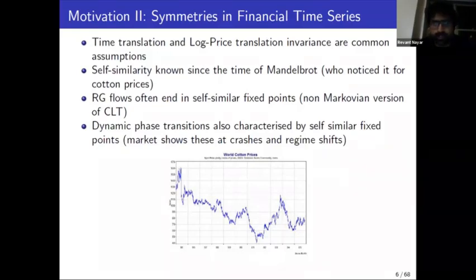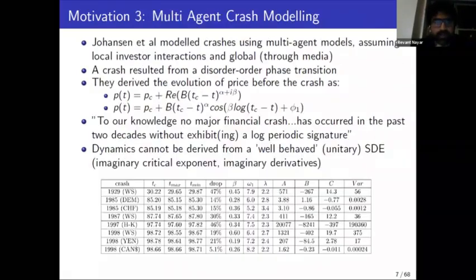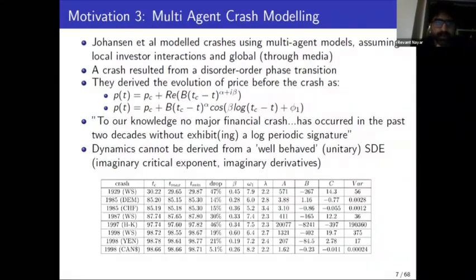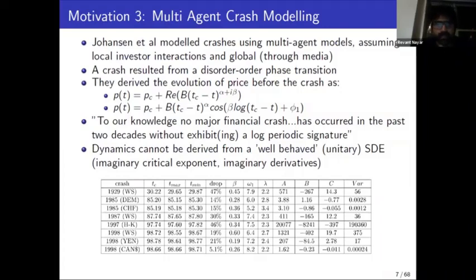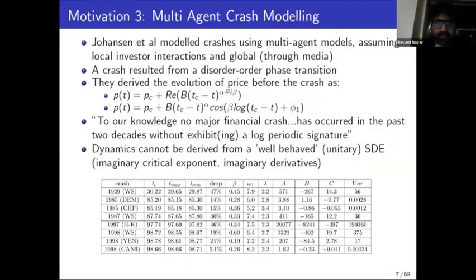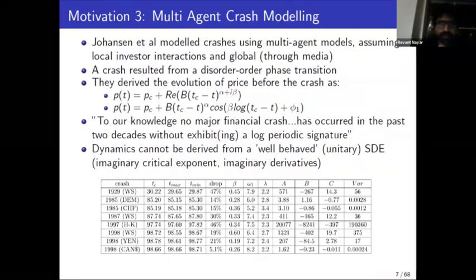These symmetries appear to hold in actual markets and in crash modeling, where people such as Johansen have used multi-agent models to characterize crashes. Even in these models, they found certain modified versions of scaling symmetries, such as the deviation of price from the critical price at the time of crash being described by power-law scalings with complex critical exponents.